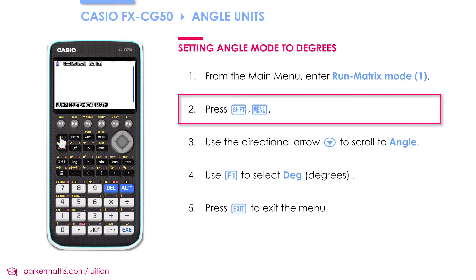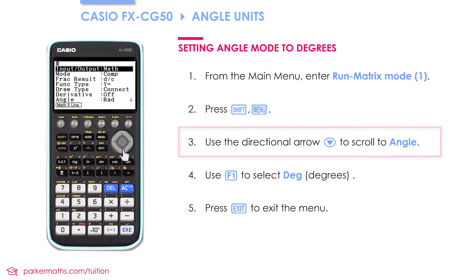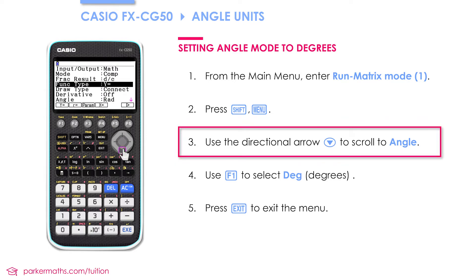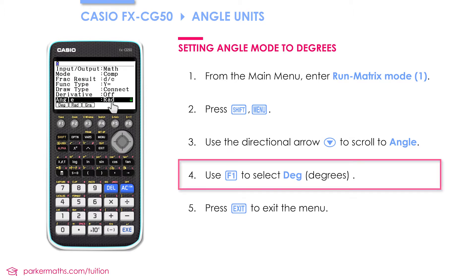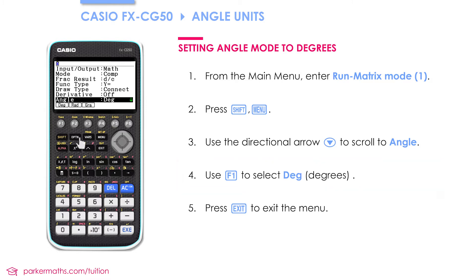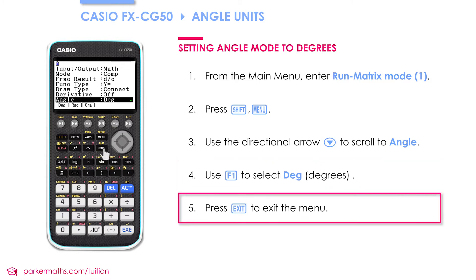Press shift and then menu to enter setup. Then use the directional arrow to cycle down until you get to angle. Change from radians to degrees by pressing F1. Finally, press exit to get out of the menu.